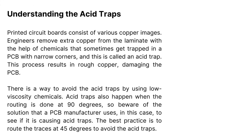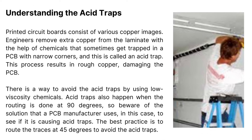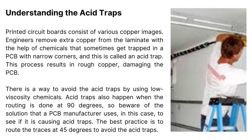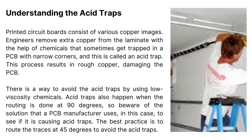Understanding acid traps: printed circuit boards consist of various copper images. Engineers remove extra copper from the laminate with chemicals that sometimes get trapped in a PCB with narrow corners — this is called an acid trap. This process results in rough copper, damaging the PCB. There is a way to avoid acid traps by using low-viscosity chemicals. Acid traps also happen when routing is done at 90 degrees, so be aware of the solution your PCB manufacturer uses. The best practice is to route the traces at 45 degrees to avoid acid traps.